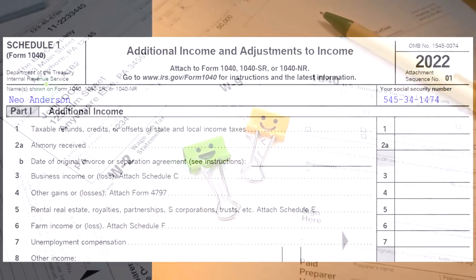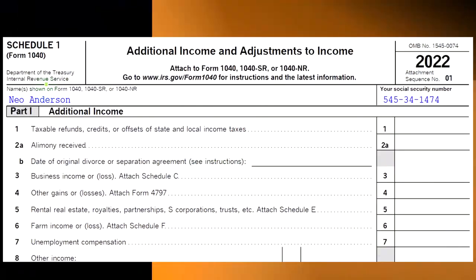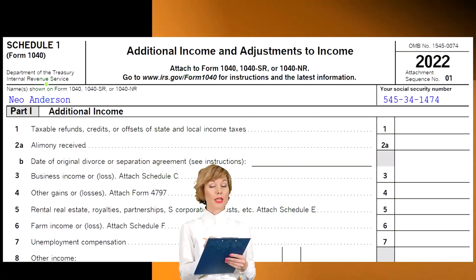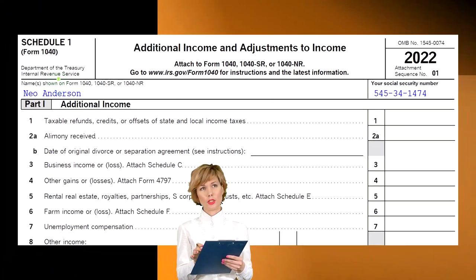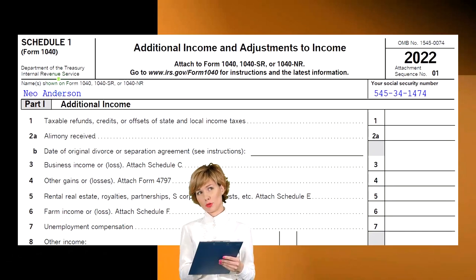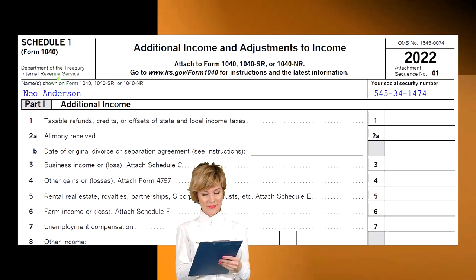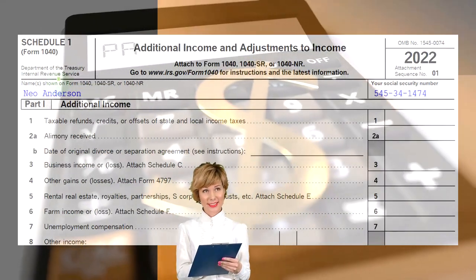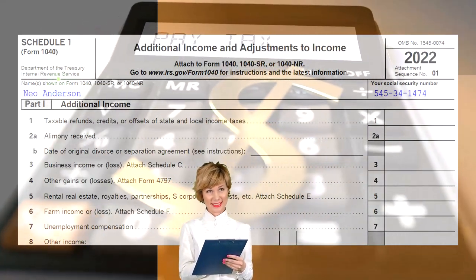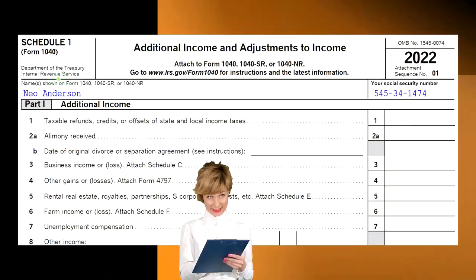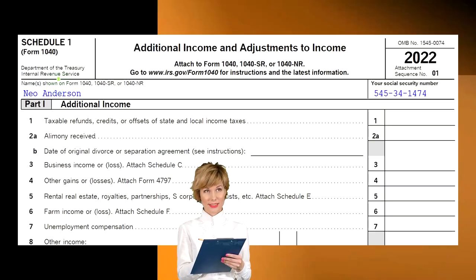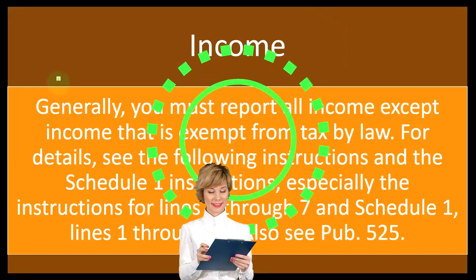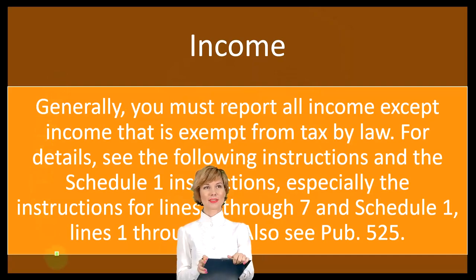Then we've got Schedule 1, which is their attempt to do what you would think would be logical today — putting more of the income lines on a separate schedule so that people with more complex tax returns could just add more schedules. Since it's electronic, you don't have to get the form from the post office; you can just use software to add on the schedules that are necessary. That's the trend I would expect going forward.